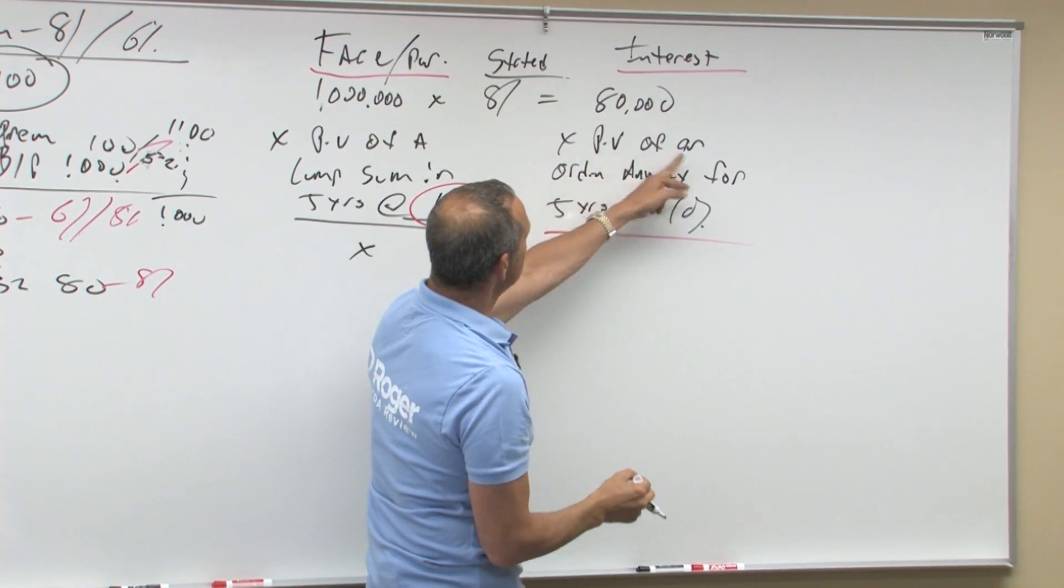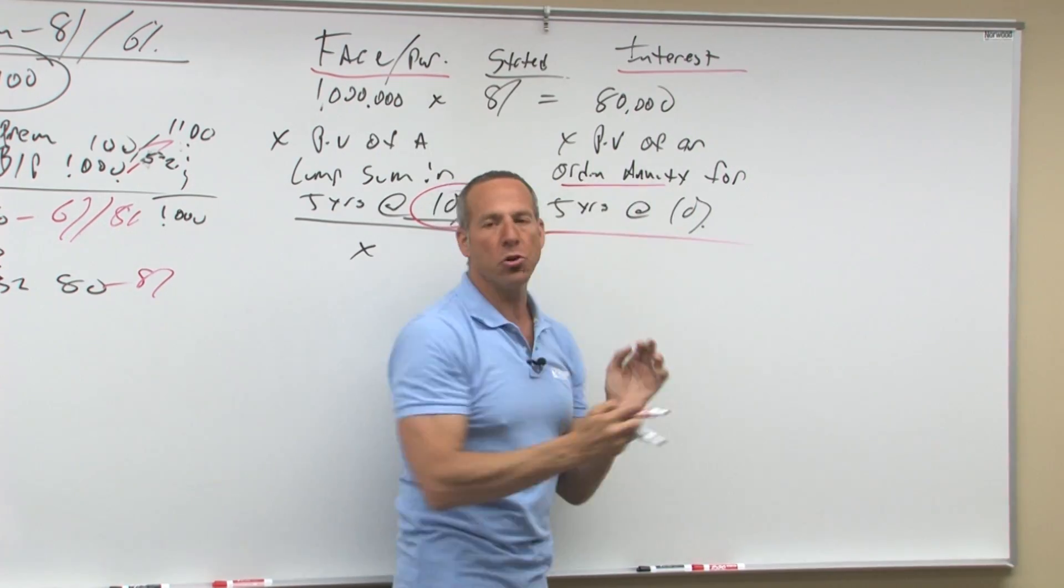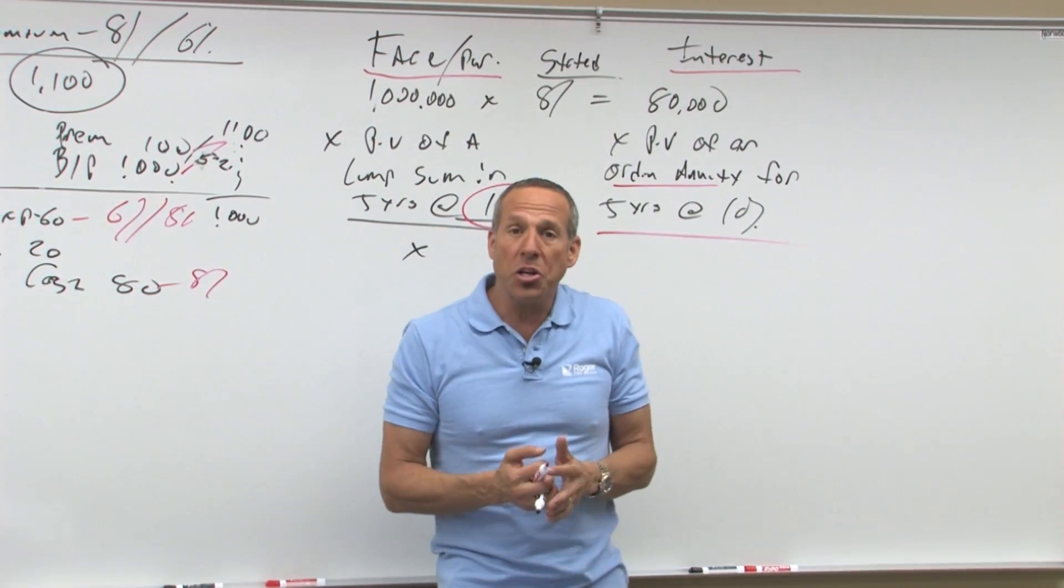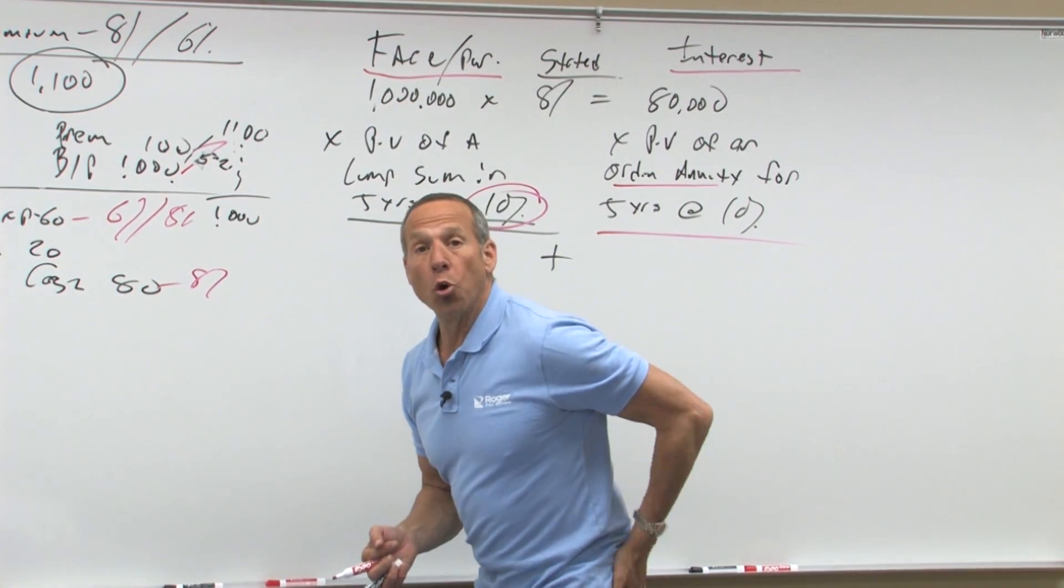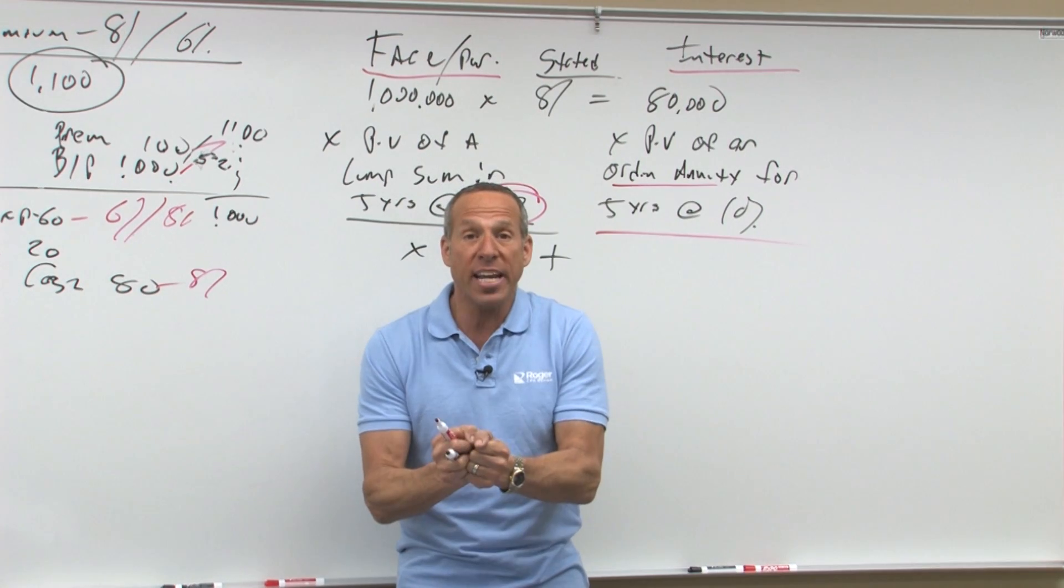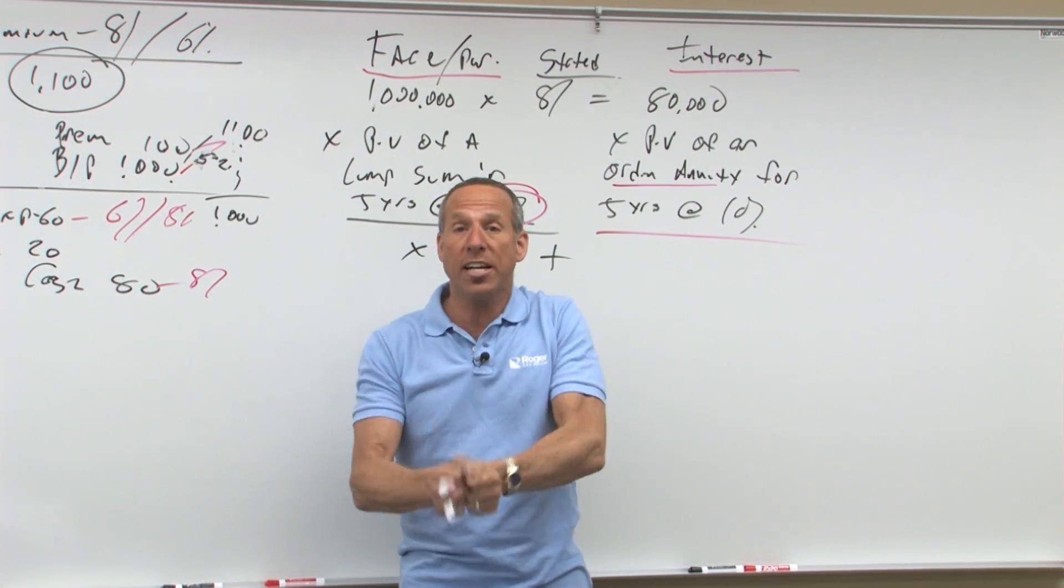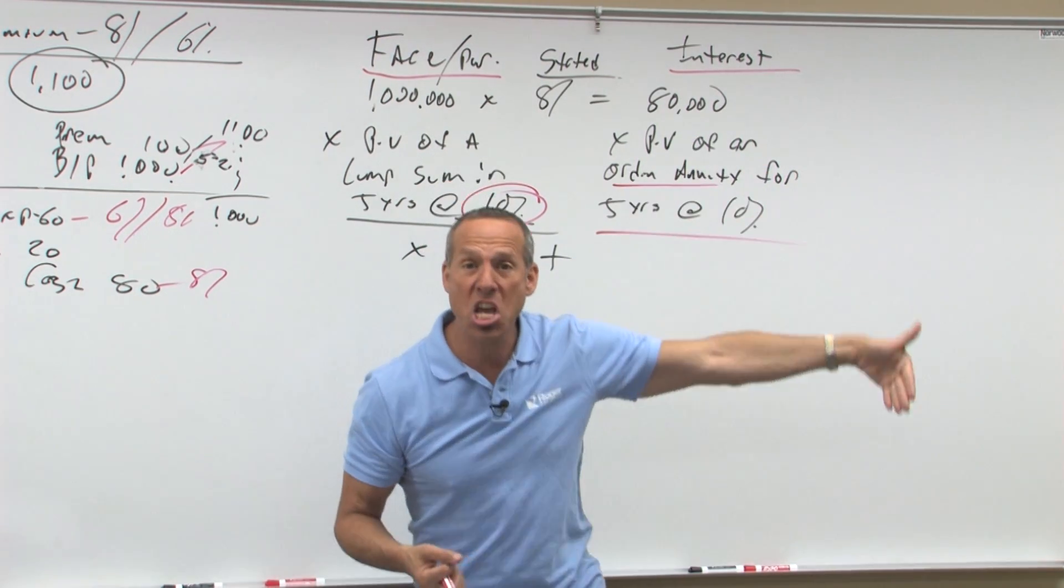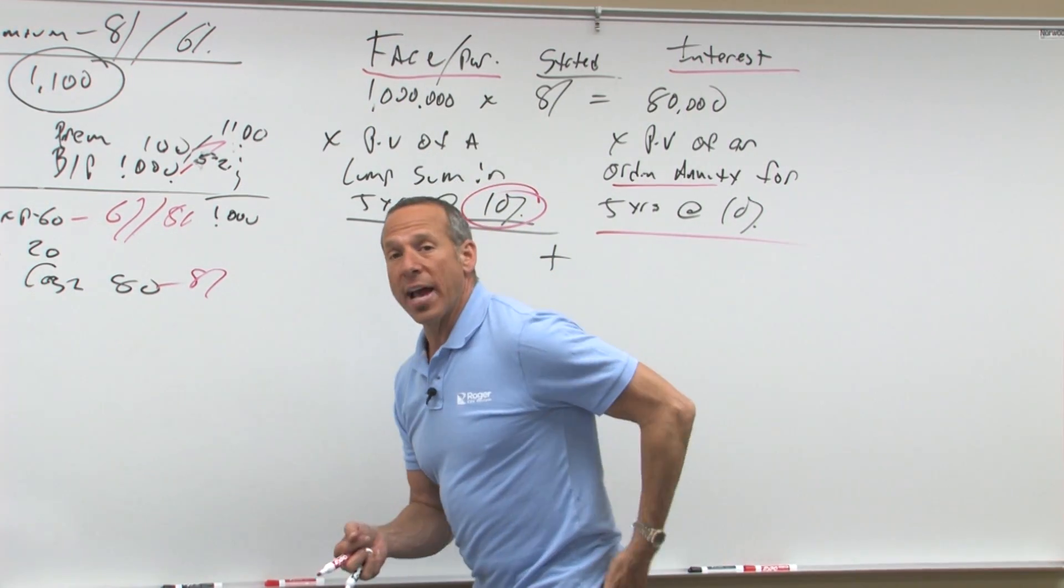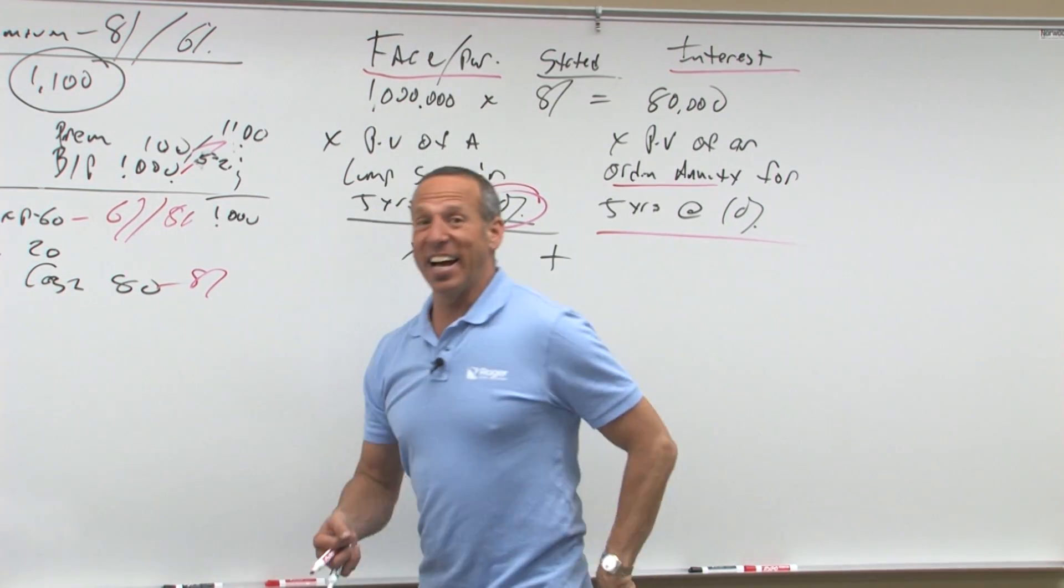We're going to learn about different types. You have an ordinary annuity. Your ordinary annuity is your arrears at the end of the year. In other words, if I buy the bond today, have I earned any interest today? No. You haven't earned the interest till the end of the year. That's called an ordinary annuity or annuity in arrears.